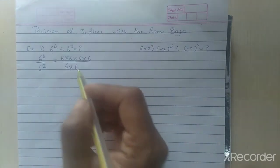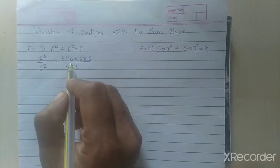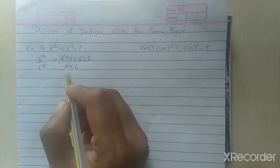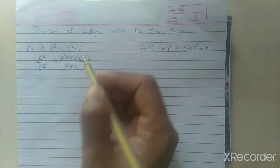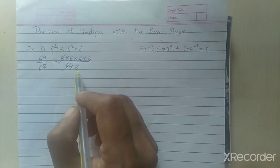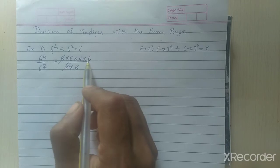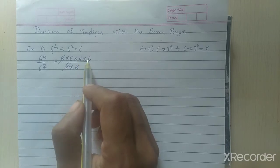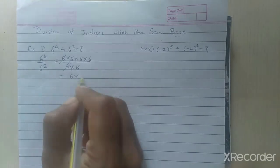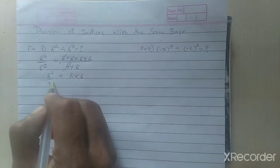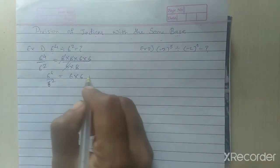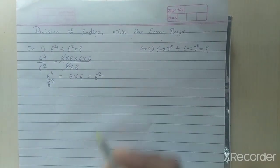Now, one 6 in the numerator and one 6 in the denominator cancel out. Again, a second pair also cancels. But in the numerator there are 2 extra 6s remaining. So 6 multiplied by 6 remains, which gives us 6 raised to 2.